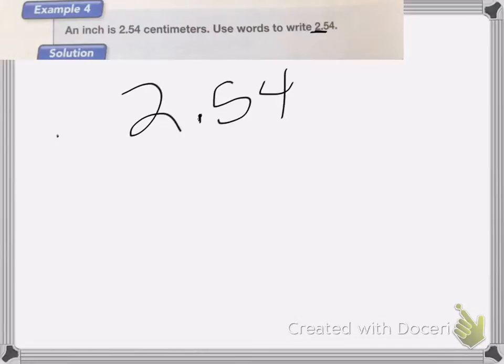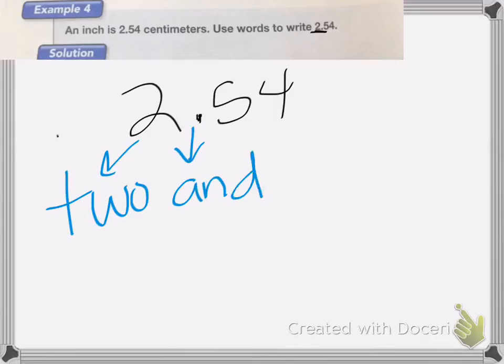So we write it as 2. The decimal place becomes our, becomes an AND. 2 AND, and then we do our decimal.